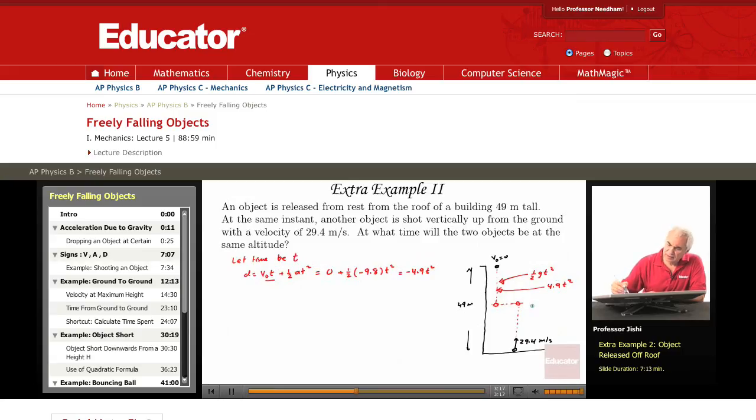Now, what about the distance here? What about this distance? This object is shot with an initial velocity of 29.4. So, how far does it rise during the time T? Again, I use a formula. So, for object 2, now,